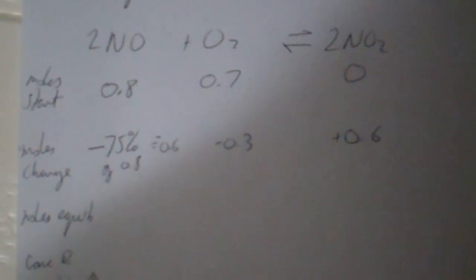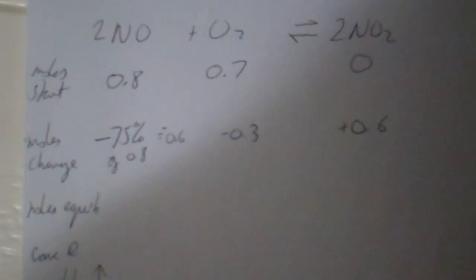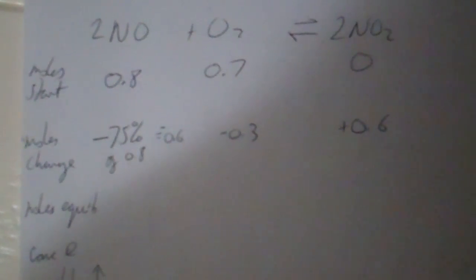So first of all, make sure you get the right number of moles. They give you 0.8 for the NO, 0.7 for the O2.